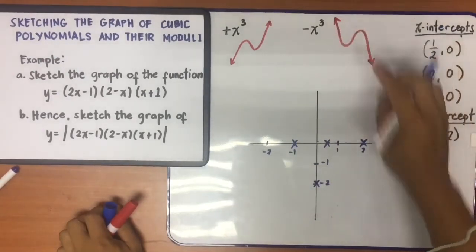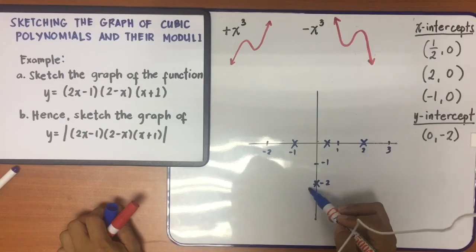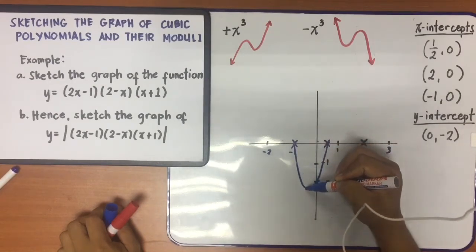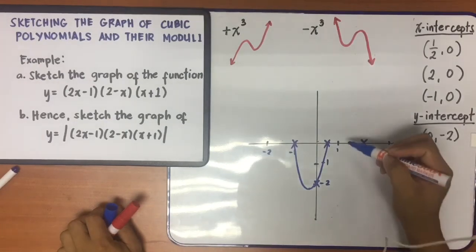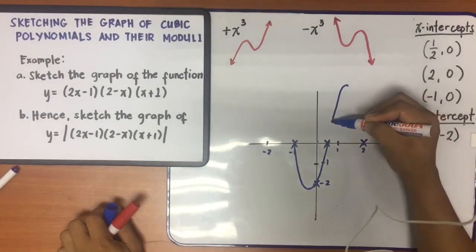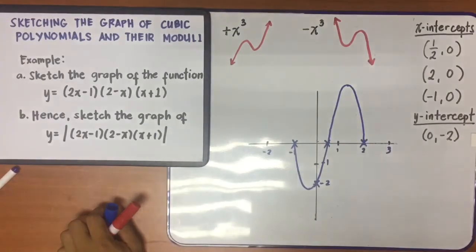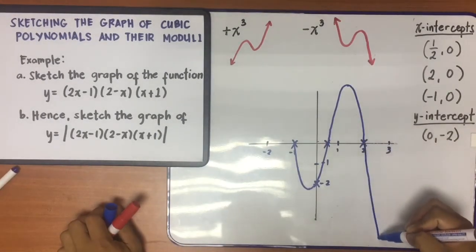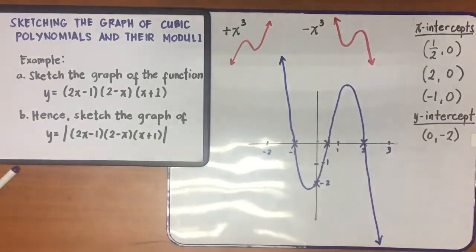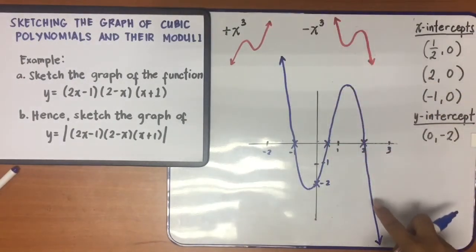Since the shape looks like the negative cubic form, the middle of the curve should be at a certain part, extending a little here. Making the curve, it will look like this — the center extending slightly, curving from there and extending outward on both ends. This will continuously go up on one side and down on the other.